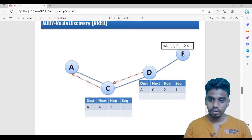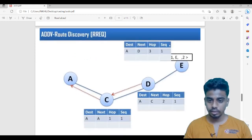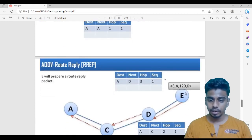E will note it in the routing table. It has to go to A, next step could be D, hop count will be 3, sequence number of A is 1. Now the packet from here to here has reached. Now it will send the reply packet.